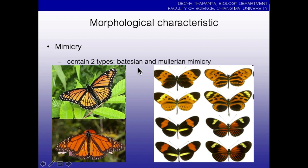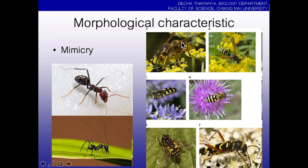Right now we have many types of mimicry. For this course, I will discuss two types. The first one is Batesian mimicry — this is also seen in ants. The upper organism here is an ant, but the lower one is a grasshopper. The grasshopper is not in the ant group but looks very similar.